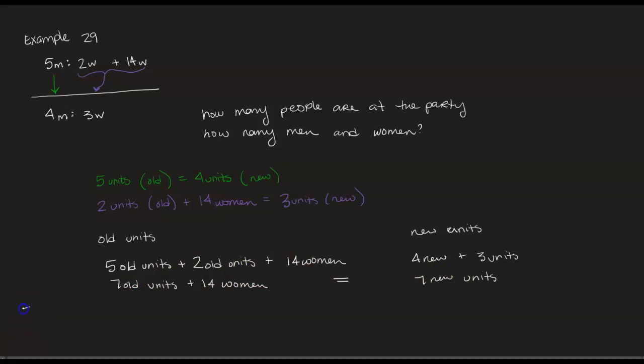So we can actually reduce this to one old unit plus two women would be equal to one new unit. And that means we can scale this up however we want. I'm going to scale it up so that we have four new units, that way I can replace it with five of the old units. So I'm going to multiply this whole equation by four so that I get four old plus eight women equals four new.